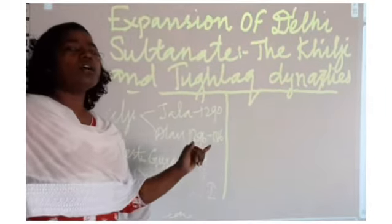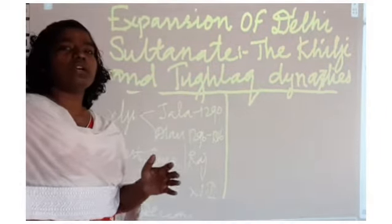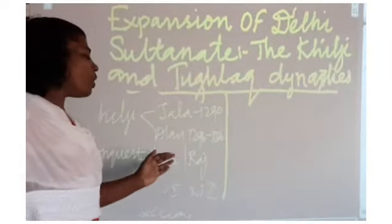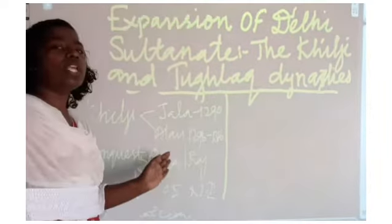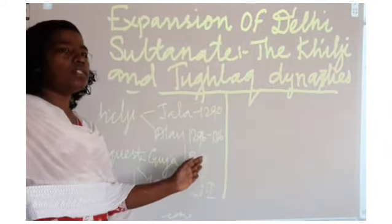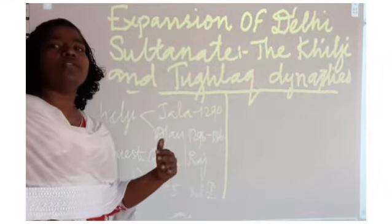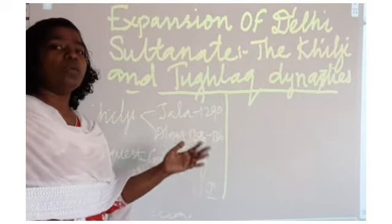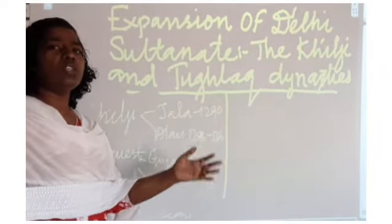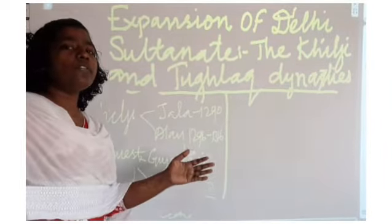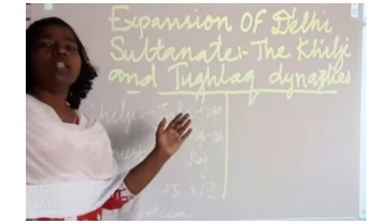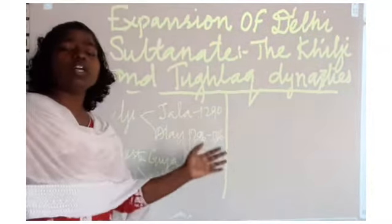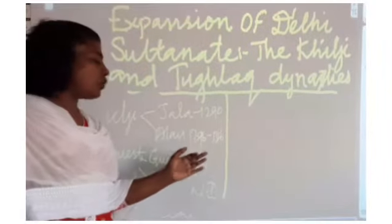Rajasthan was ruled by different Rajput rulers. Alauddin conquered Gujarat and Rajasthan. In Rajasthan, he conquered different parts like Malwa, Mewar, Chittor, and Ranthambore. These parts were destroyed and demolished, and the Rajput rulers became submissive to him.